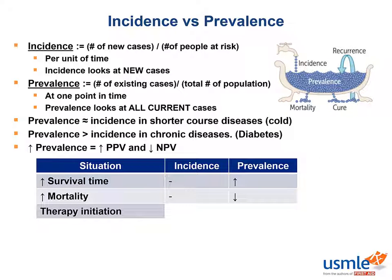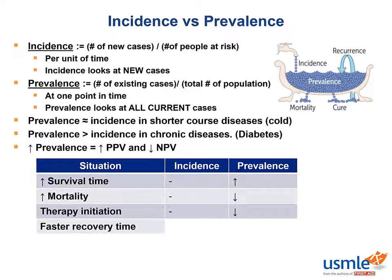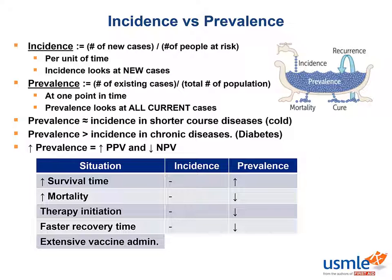How about therapy initiation? This would also decrease prevalence because we are increasing the chances that a patient will be cured sooner. How about faster recovery time? Again, prevalence is down because we have more people getting healthier faster. What about extensive vaccine administration? Here we are going to see a drop in incidence and prevalence. If we are decreasing the number of incidences by preemptively vaccinating a population, then we are also going to decrease the total number of existing cases in the population.